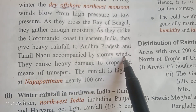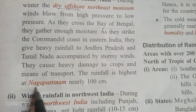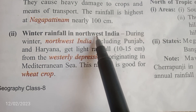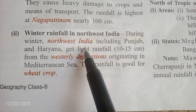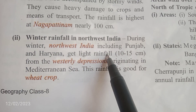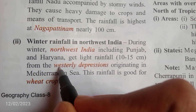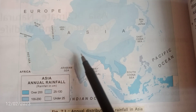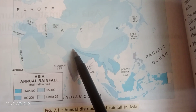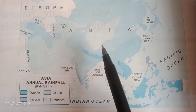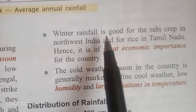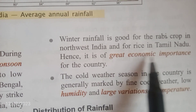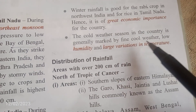The northeast monsoon winds give rainfall accompanied by stormy winds. The highest rainfall is in Tamil Nadu — Nagapatnam receives nearly 100 centimeters of winter rainfall. In northwest India, including Punjab, Haryana, and Kashmir, little rainfall occurs due to western disturbances. Western disturbances are winds that originate in the Mediterranean Sea and give rainfall to northwest India during winter. This winter rainfall in northwest India is helpful for growing wheat crops, and the winter rainfall in Tamil Nadu is helpful for growing Rabi crops. This is of great economic importance.